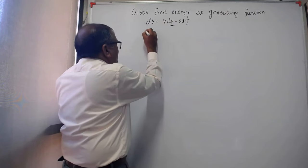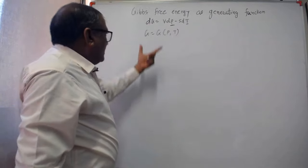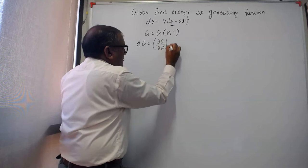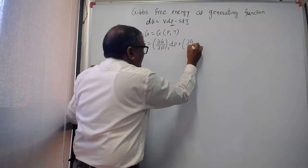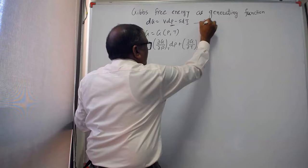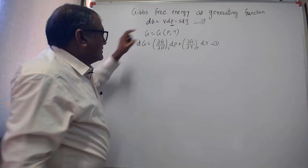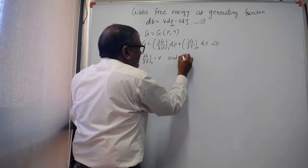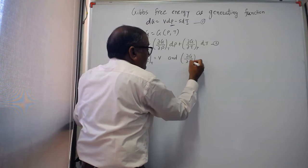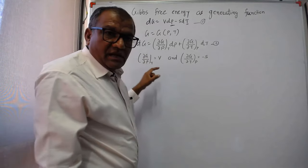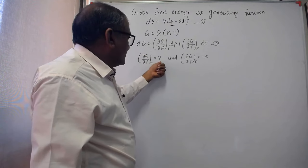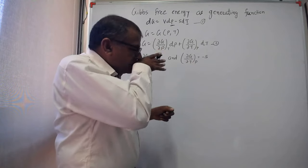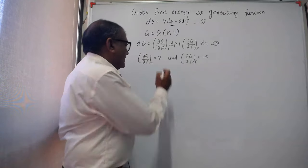Here, I am going to write g as a function of two canonical variables, P and T. If I take the differentiation of this equation, it would be dg equal to (∂g/∂p) at constant temperature dp plus (∂g/∂T) at constant pressure dT. Comparing these two equations, we know that v = (∂g/∂p)_T and (∂g/∂T)_p = −s. This means we can calculate the value of v and entropy from g.